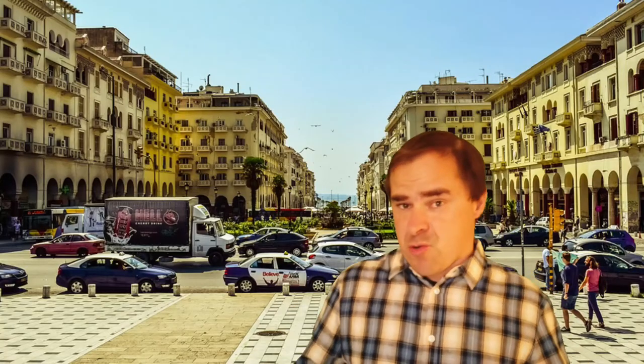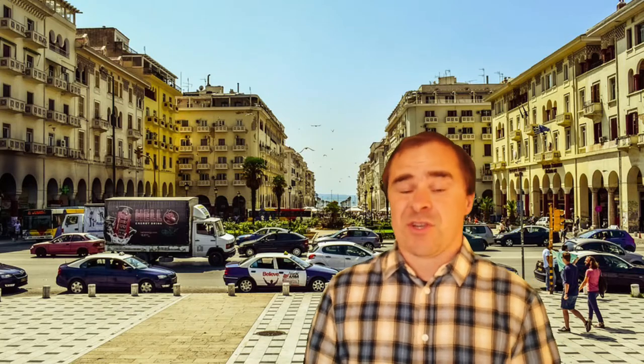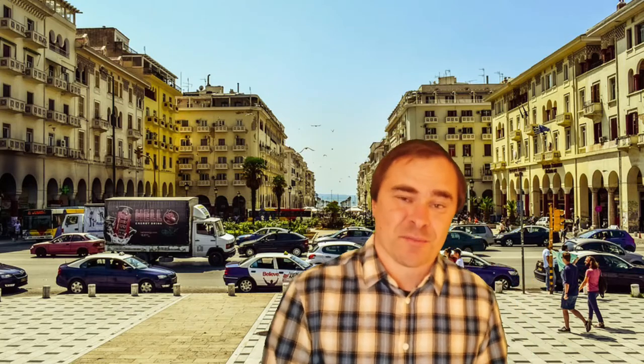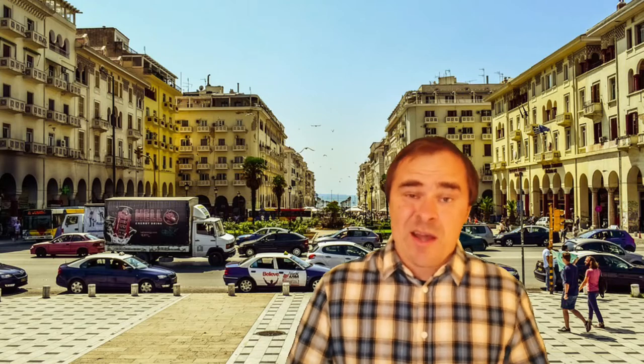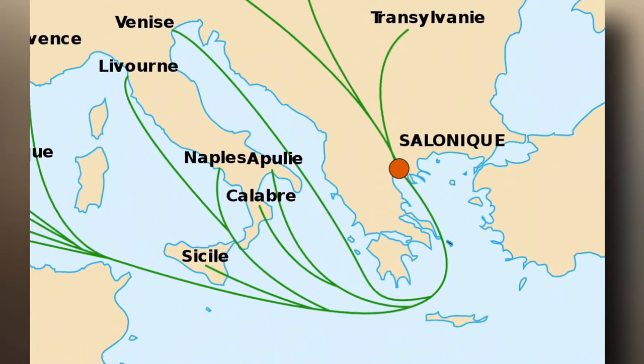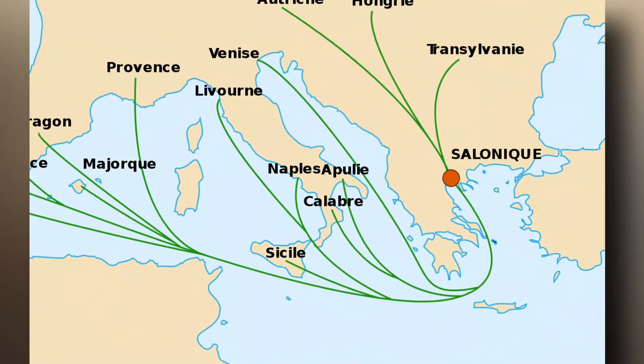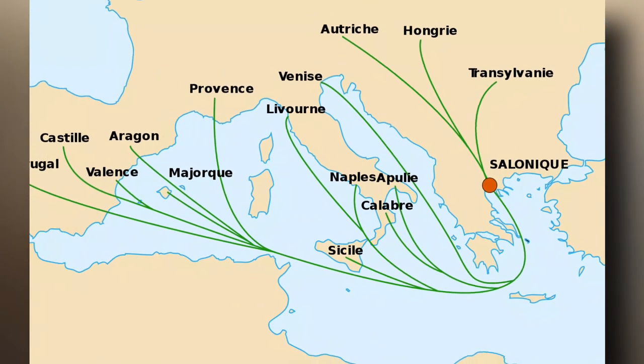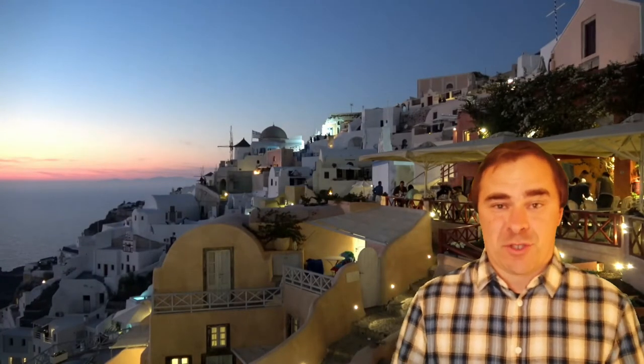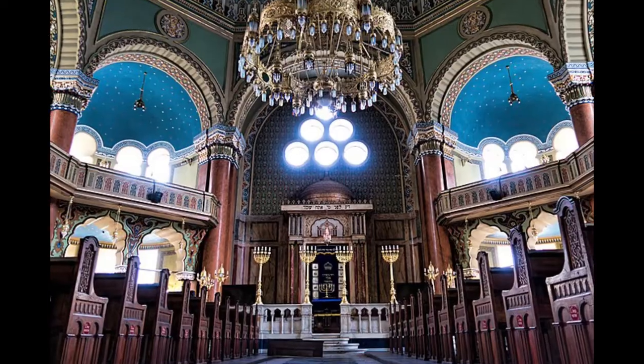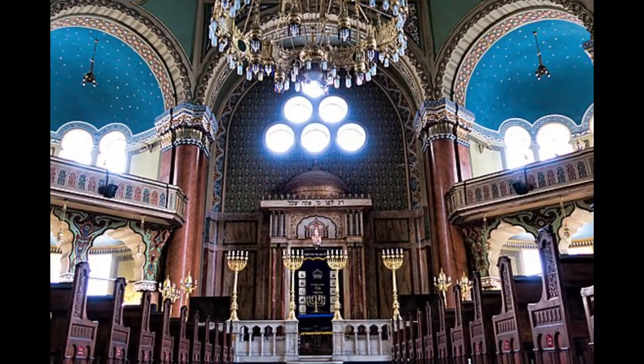Thessaloniki, in present-day Greece, was the big epicenter of this. I found out something really interesting making this video: Thessaloniki has the oldest continuous Jewish community in all of Europe — quite special. So many Jewish people moved to Thessaloniki that the common language was Ladino, not Greek — it was a Ladino-speaking city. And across the Balkans, you had pockets of communities speaking Ladino, and it became a trading language in the Adriatic Sea.